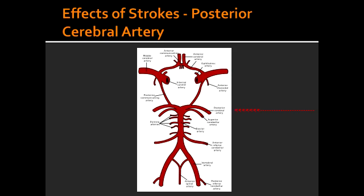PCA, which is the posterior cerebral artery. What are the areas of lesion in a stroke at the level of the posterior cerebral artery? The areas of stroke include the occipital cortex and the visual cortex. Some of the symptoms include contralateral hemianopia with macular sparing.